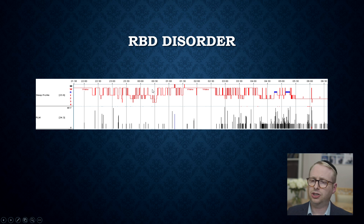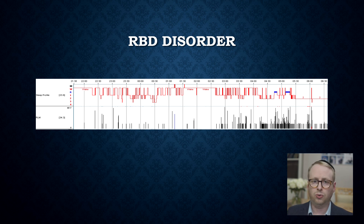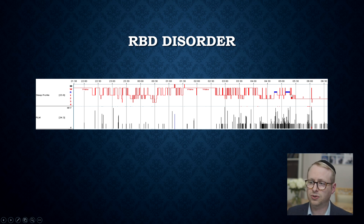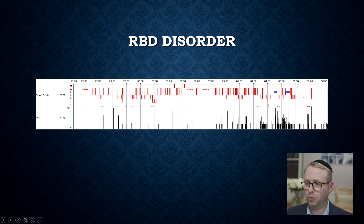This is another variation called REM sleep behavior disorder. We've talked previously about how, when people are in the REM sleep state, all skeletal muscles — apart from eye movement and the diaphragm — are effectively paralyzed to prevent injury, so we don't act out our dreams. But over here, where you see the blue bars where REM is occurring, there is a lot of movement of their limbs, which is reflective of their REM sleep behavior disorder.